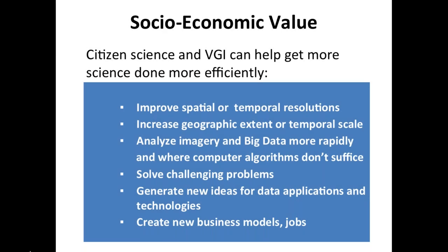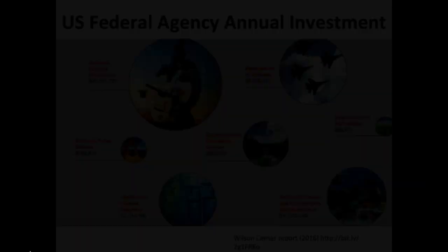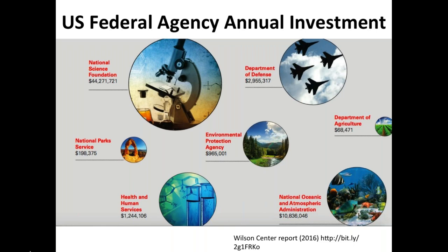The US federal government has made substantial investments in citizen science. The NSF has invested $265 million over the last six years, annualized at $44 million a year — they've made the biggest investments. NOAA, NASA, Health and Human Services, and other agencies are making $1 to $10 million a year, and these numbers are growing.